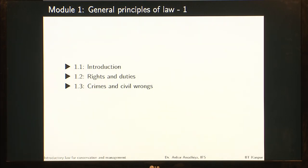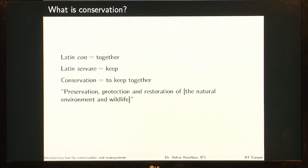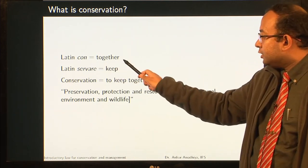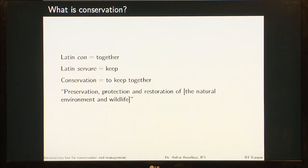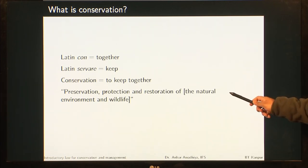In the first module, The General Principles of Law 1, we had three lectures: Introduction, Rights and Duties, and Crimes and Civil Wrongs. In the introduction, we saw what conservation means, looking at the word roots. Latin 'con' means together and 'servare' is to keep. So conservation is to keep something together — to preserve, protect, and restore something. In the context of this course, we are talking about the conservation of the natural environment and wildlife.